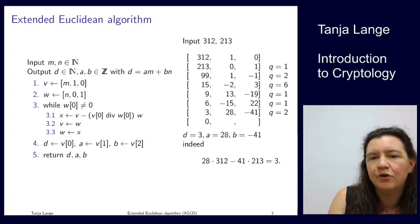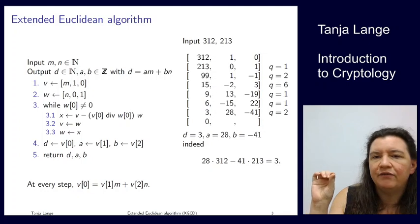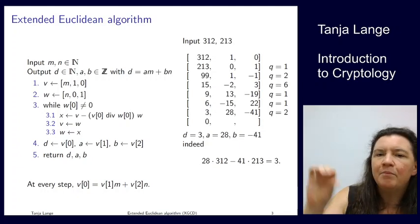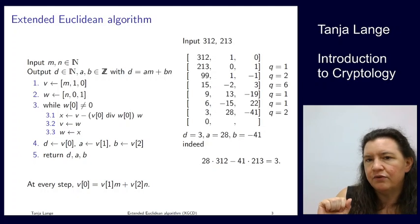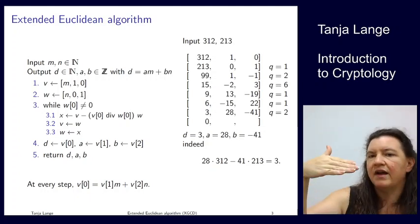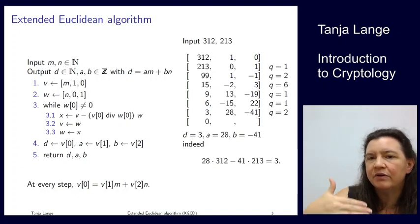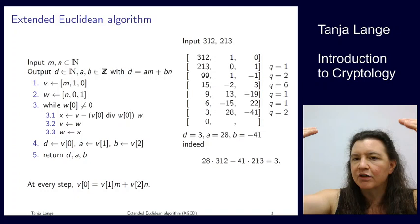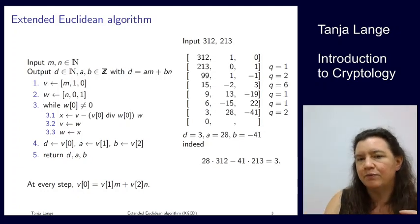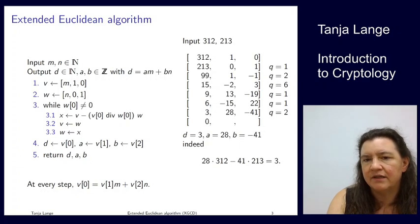One thing to see why this algorithm is working is that at each step you have that, I'm just writing it for v, but the same is true for w, at each step you have that the first entry is equal to the next entry times m plus the last entry times n. Very obviously for the first row, 312 is 1 times 312. But also for the second row, 213 is 0 times 312 plus 1 times 213. And since the first two rows satisfy this, it is also satisfied by any subsequent row, because all we're doing is adding multiples of one row to the other. So they will always keep having this relation with one another. And then at the end, when the first position is the GCD, then we're getting these two coefficients from the extended Euclidean algorithm there.